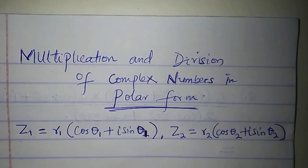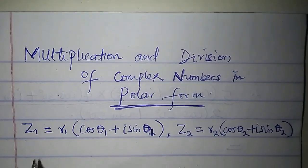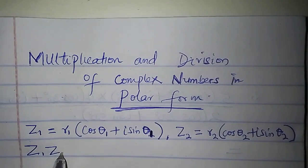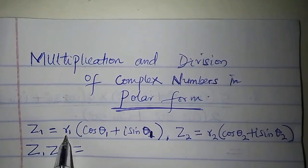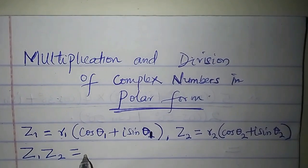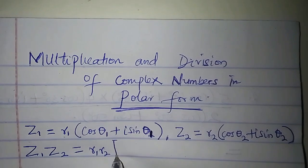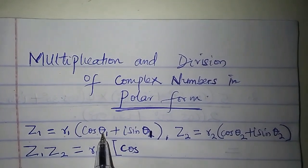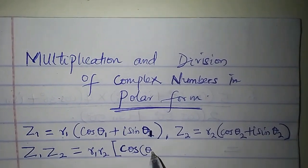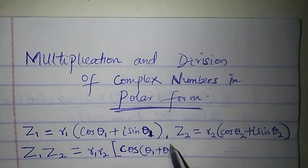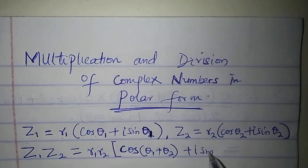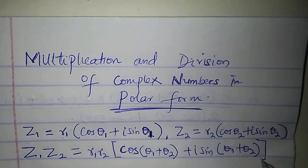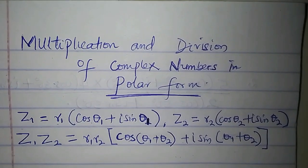Now I want to multiply these complex numbers in polar form. This is the principle: z1 times z2 is equal to r1 times r2, then in brackets cos(θ1 + θ2) + i sin(θ1 + θ2). So this is how to multiply complex numbers in polar form.